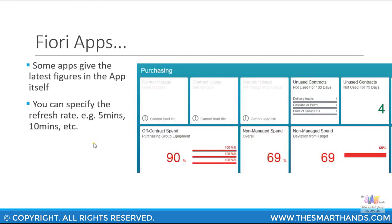There are plenty of advantages with Fiori Apps. Another great feature is that it gives you real-time information directly in the app tile itself. For example, you can see how many unused contracts there are for the last 75 days, purchasing amounts, or any dollar or percentage value in real time. You can see details like contract spend at 90 percent and so on. You can also set a refresh rate — for example, every five or ten minutes — giving you a real-time view of your organizational data.